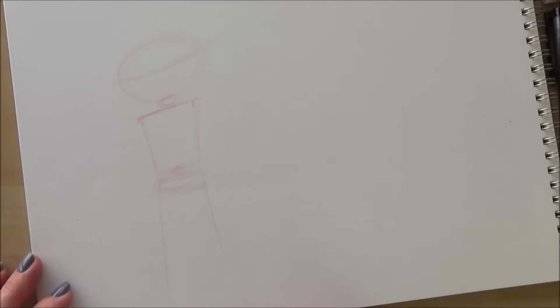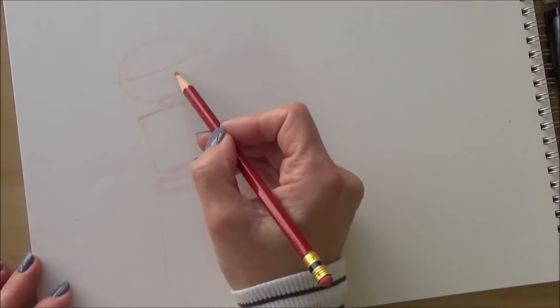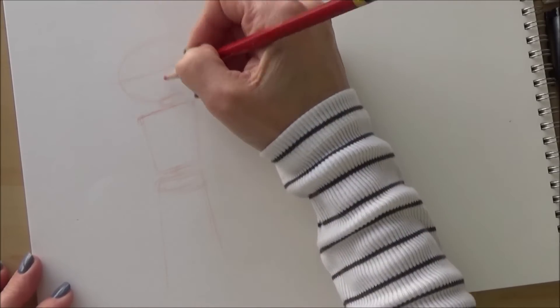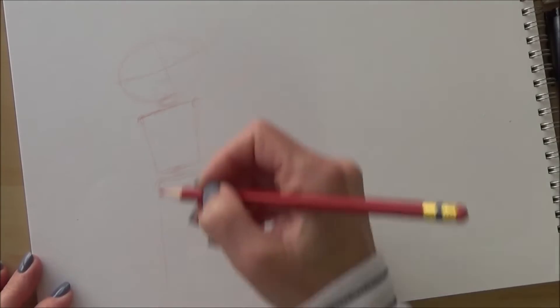Roughly speaking though, the head I've drawn is about a quarter of the total character's height. The top part of the body takes up another quarter, and the bottom and legs take up the final half.